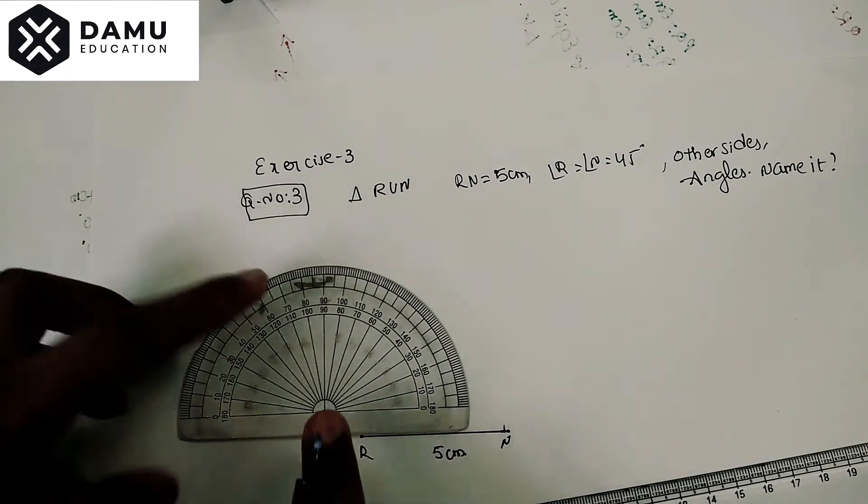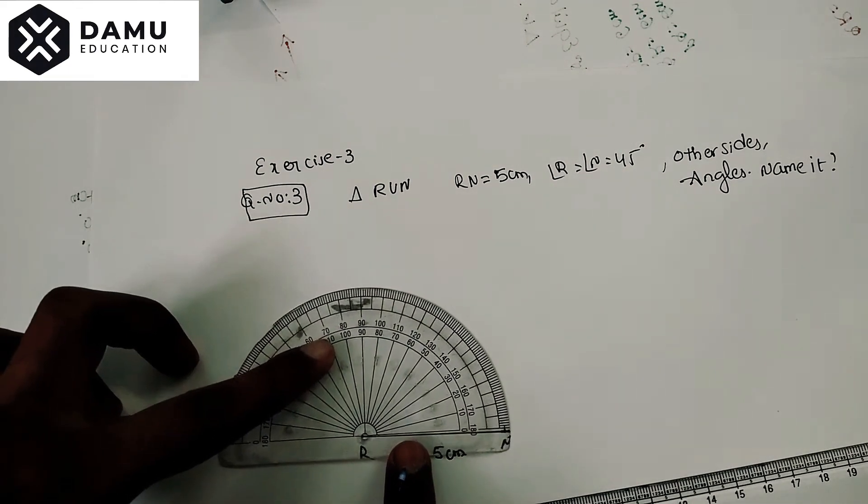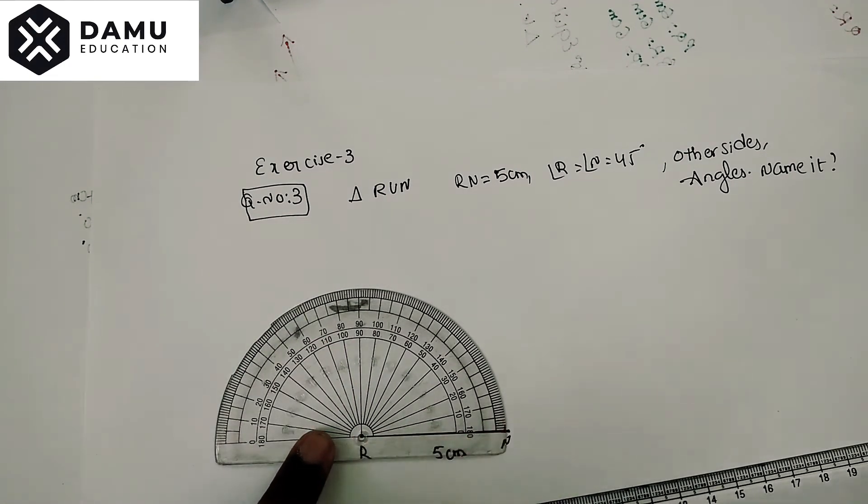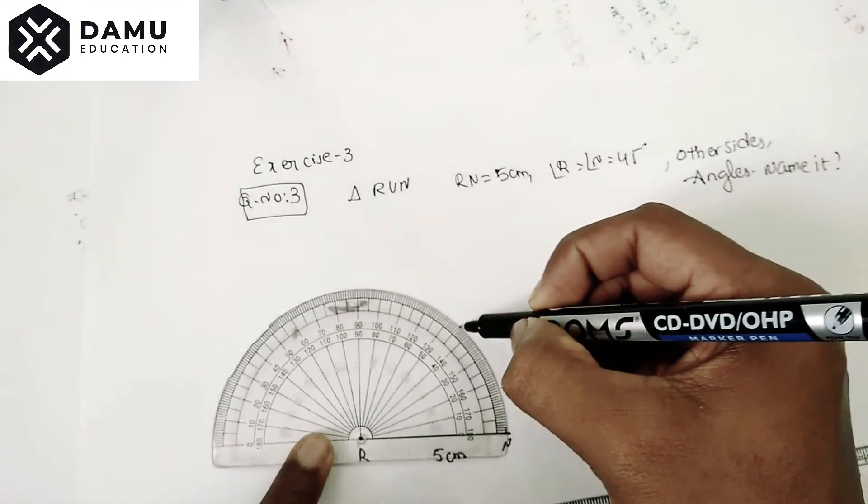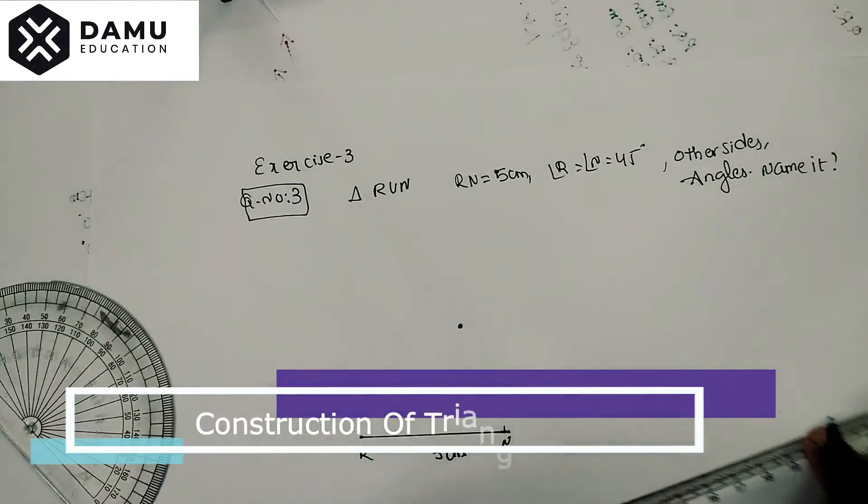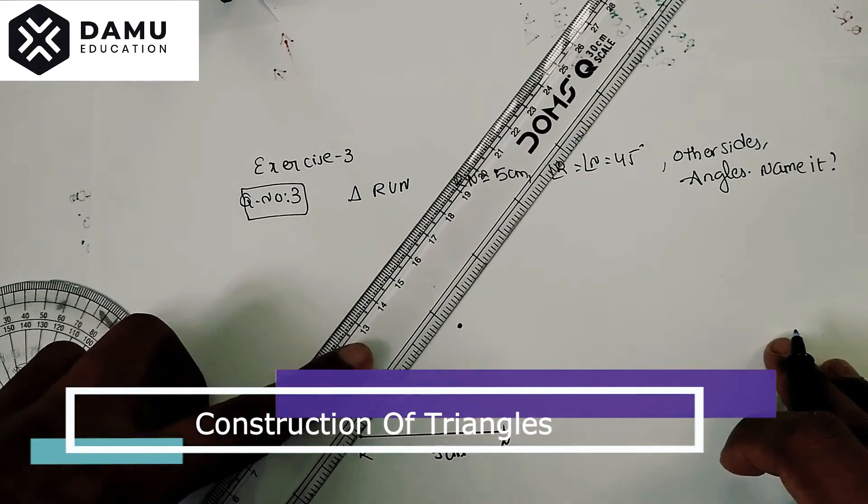Keep the midpoint of the protractor and place this side down. From this side we have to measure the angle at 45 degrees. Put one point and draw one ray from R as the center at 45 degrees.